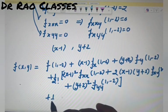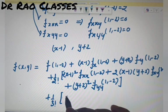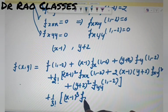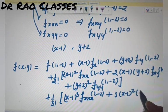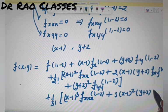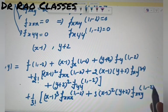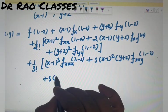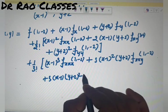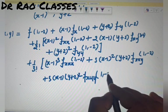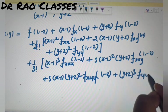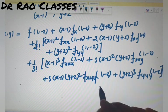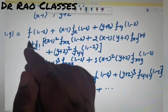Third order term: 1/3! × [3(x-1)²(y+2)·f_xxy + 3(x-1)(y+2)²·f_xyy + (y+2)³·f_yyy + (x-1)³·f_xxx] — इनमें से केवल f_xxy वाली term non-zero है, बाकी सारी 0 हैं। इससे आगे जाने का कोई फायदा नहीं।